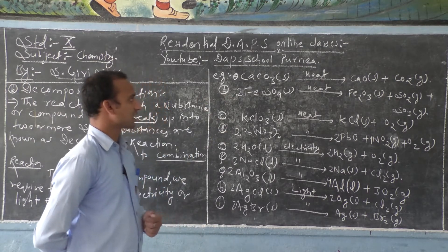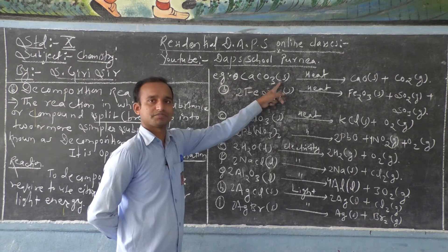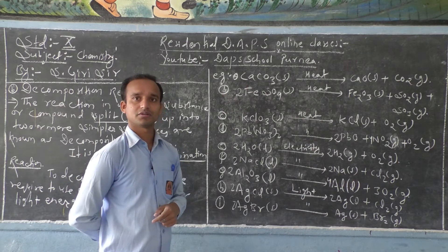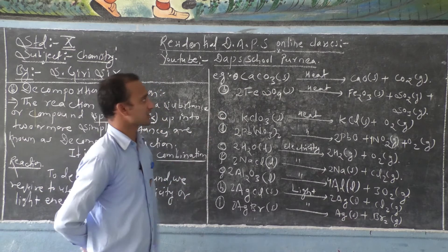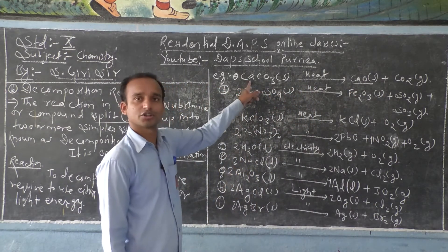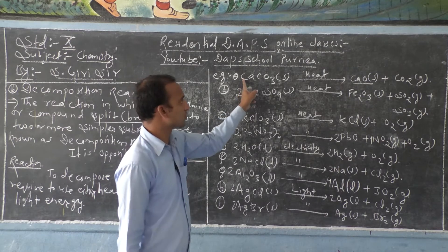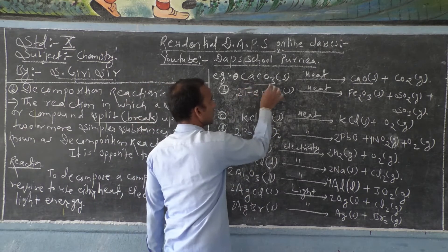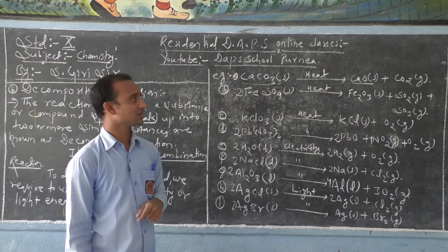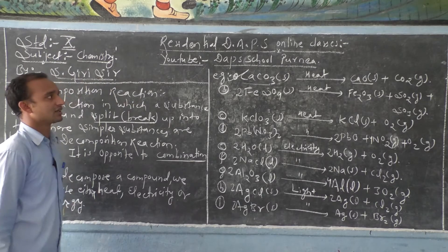Now let us discuss some examples of decomposition reactions. Number one: calcium carbonate in solid state — that is limestone. When you heat CaCO3, it breaks into quicklime, calcium oxide (CaO), plus CO2 gas. So CaCO3 decomposes by heat energy to form CaO and CO2. CaCO3 is decomposing using heat energy.